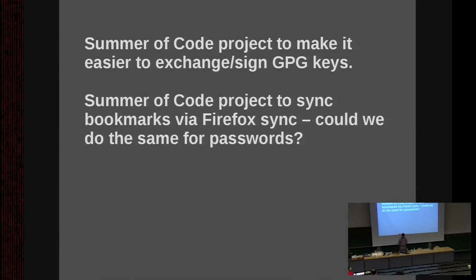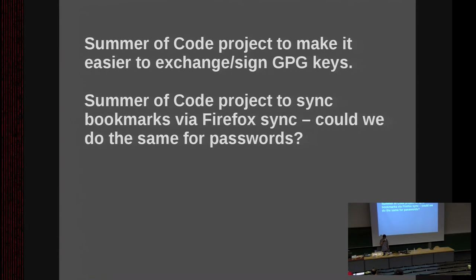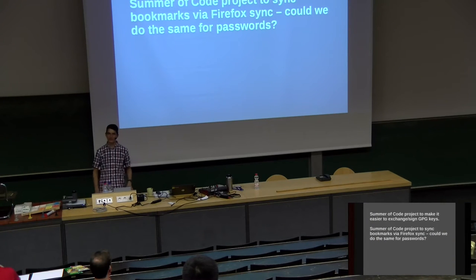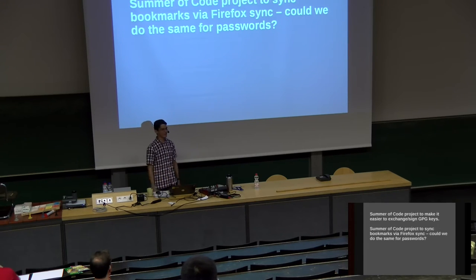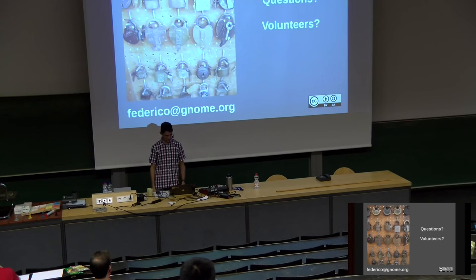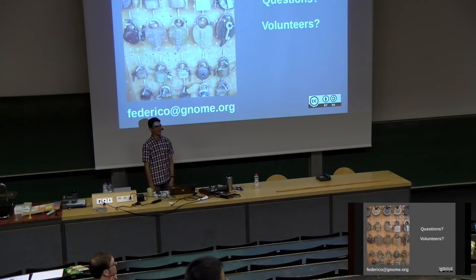On the good news side, there's a Google Summer of Code project to make it easier to change GPG keys for key signing parties or when you meet someone and want to exchange public keys. There's the Summer of Code project to finish Epiphany with Firefox Sync — we could use the same infrastructure to share whole keyrings from Seahorse. And Michael Catanzaro just told me that Daiki Ueno is doing a Seahorse rewrite, which I wasn't aware of. So don't start fixing Seahorse right away because it's being rewritten — hopefully we'll see good work along those lines soon.